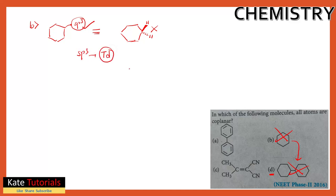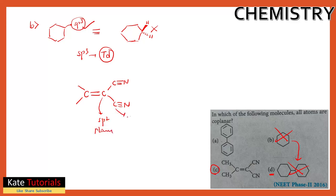For option C, we have C double bond C, and C triple bond N on both sides. The carbon in the double bond is sp2, so that part is planar. The carbon in C triple bond N is sp, so that part is also planar. So this carbon, this carbon, nitrogen — all lie in one plane.